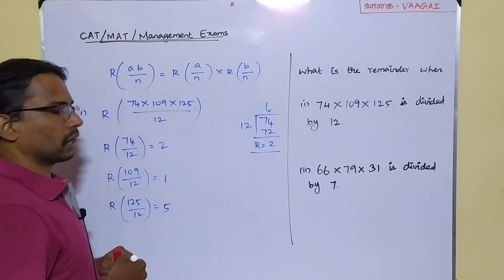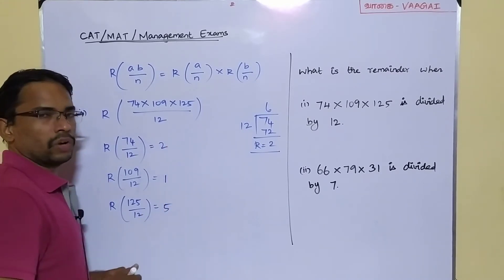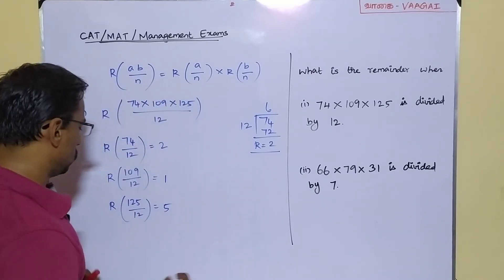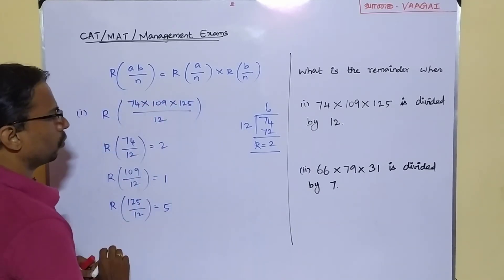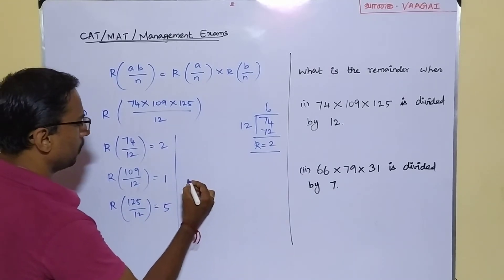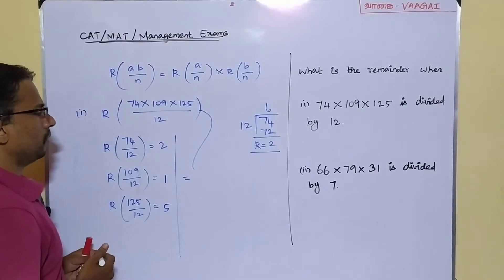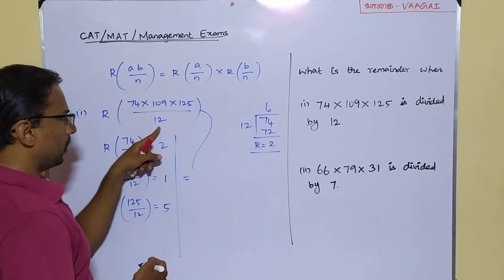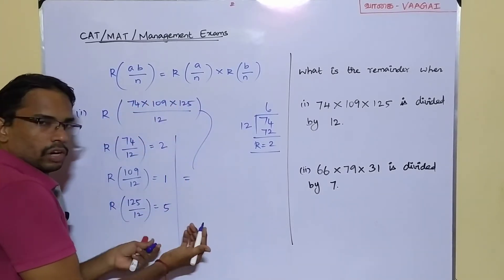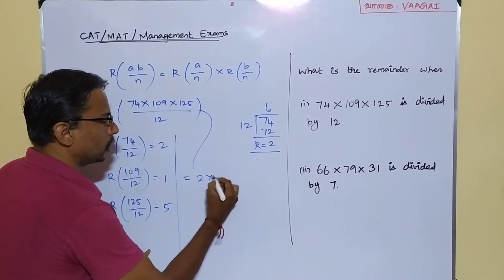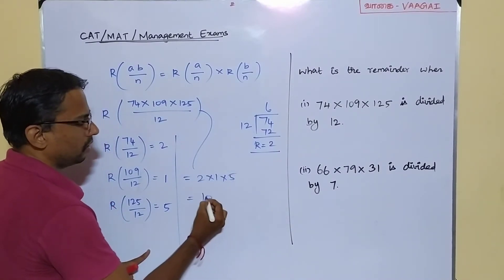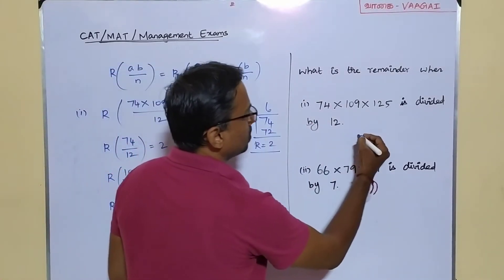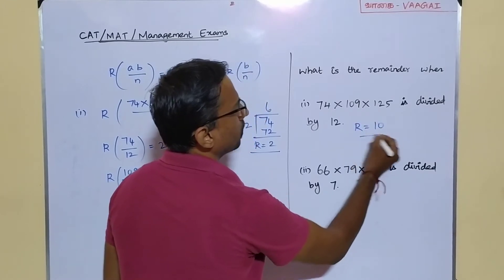According to the remainder property, we have found the individual remainders. To get the overall remainder for the entire product, we simply multiply the individual remainders: remainder of 74÷12 × remainder of 109÷12 × remainder of 125÷12 = 2×1×5 = 10. So the answer for the first question is remainder = 10.